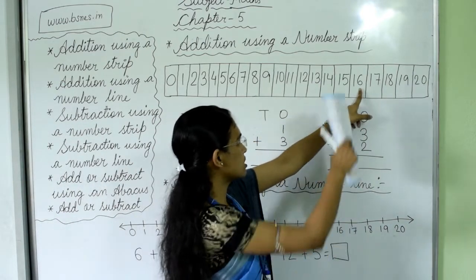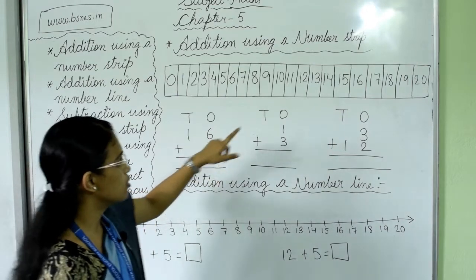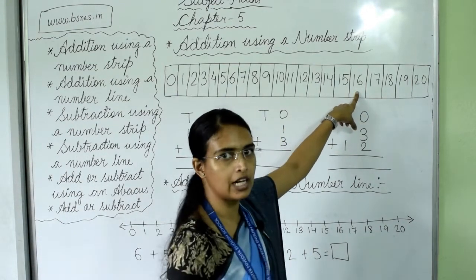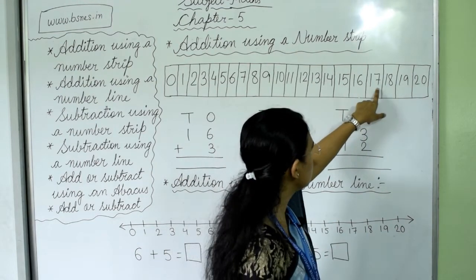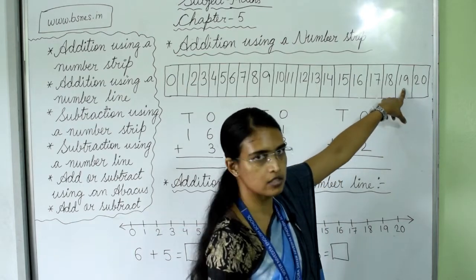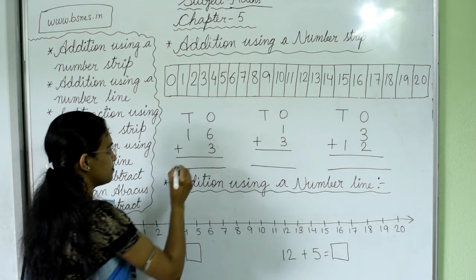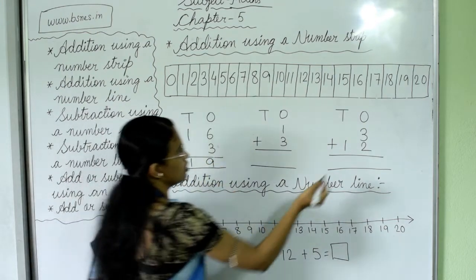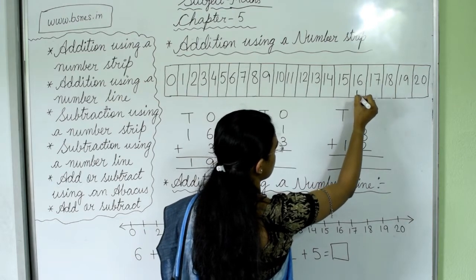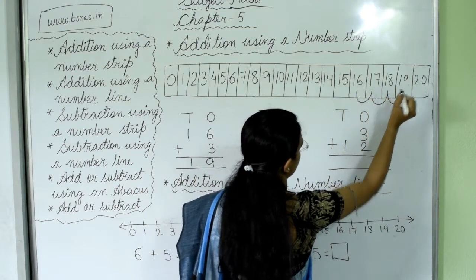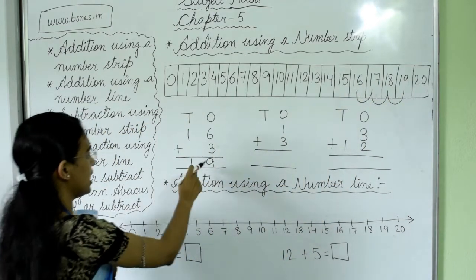We have to find our first number, that is 16. From 16, we have to take 3 steps forward: 1, 2, 3. So the answer is 19. 16 plus 3 equals 19. You take 1 step, 2 steps, 3 steps from 16, and you reach 19.